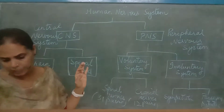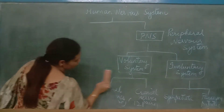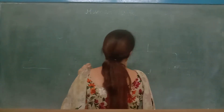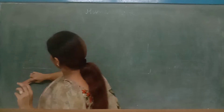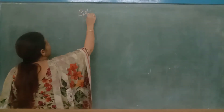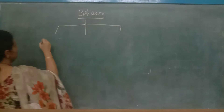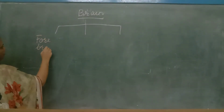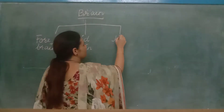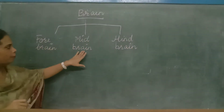Now we will explain the CNS — that is the central nervous system — starting with the brain. The brain consists of three parts: number one is the forebrain, then is the midbrain, and then is the hindbrain.